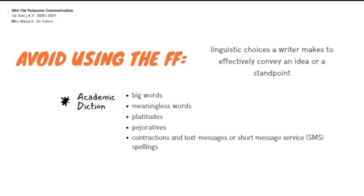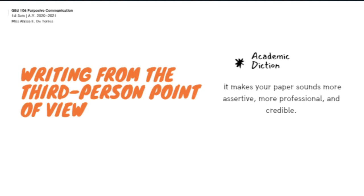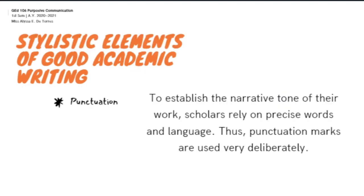And why do we need to avoid the following? These casual expressions may be appropriate in informal or personal messages, but they are inappropriate in academic research papers. The next point is the use of personal pronouns carefully. Generally, you also want to avoid using the personal 'I' in an academic paper unless you are writing a reflection paper or a reaction paper. Writing from the third person point of view makes your paper sound more assertive, more professional, and more credible.